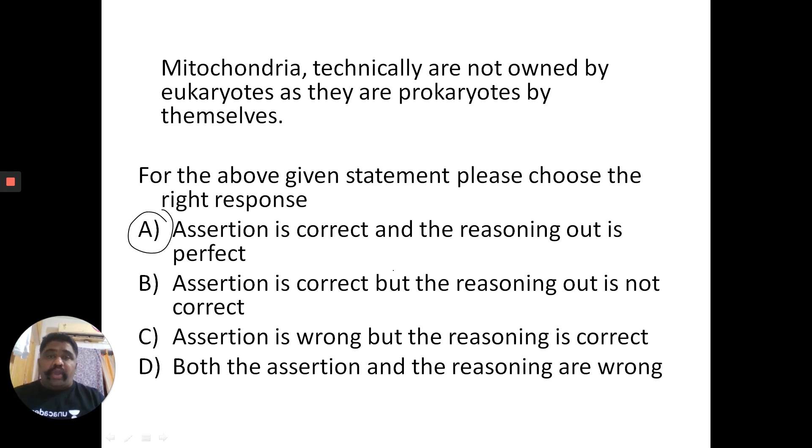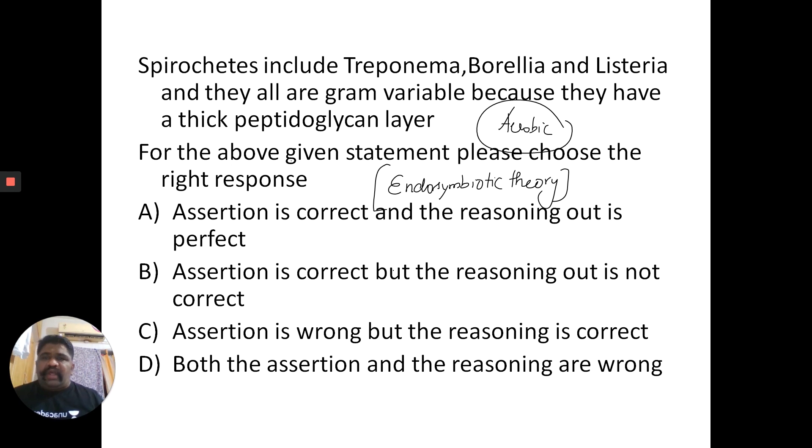Now, let us look at another question and see how we can be hoodwinked. Spirochetes include Treponema, Borrelia and Listeria and they all are gram variable because they have a thick peptidoglycan layer.